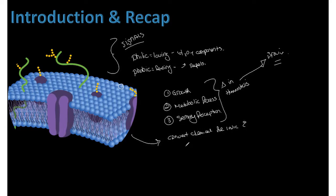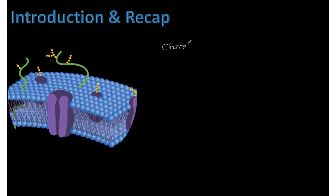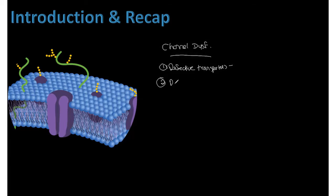The reason channels are important is that they are the basis of most diseases. We can have defective transporters — as seen in cystic fibrosis, where aquaporin dysfunction causes lack of water movement and leads to sclerosing of lung tissue. Or defective channels, like in long QT syndrome or paralysis — where a channel is either not functioning or functioning too much, creating pathology.